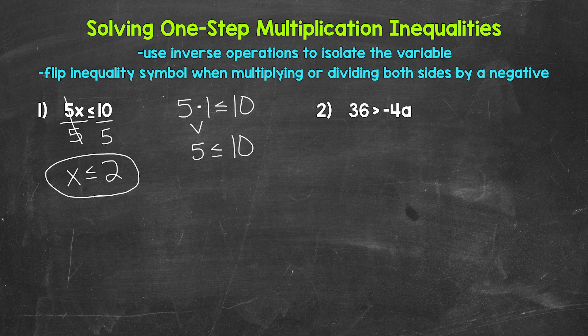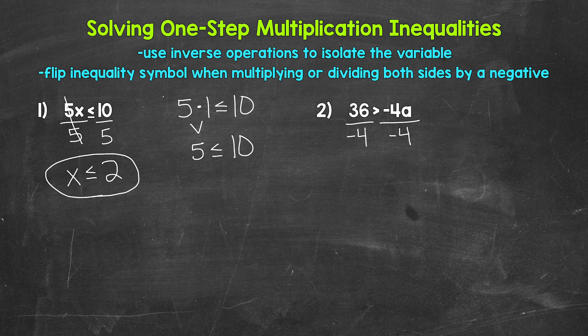Let's move on to number 2, where we have 36 is greater than negative 4a. We need to isolate the variable a. It's being multiplied by negative 4, so we need the inverse operation — division. Divide the right side by negative 4, which means we need to divide the left side by negative 4 as well. Remember: when we multiply or divide both sides by a negative, the inequality symbol flips. Here we are dividing both sides by negative 4, so the negative 4s on the right cancel each other out and a is now isolated.